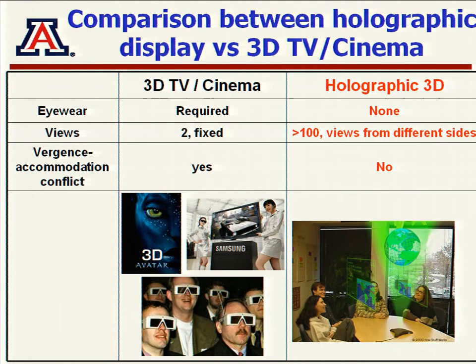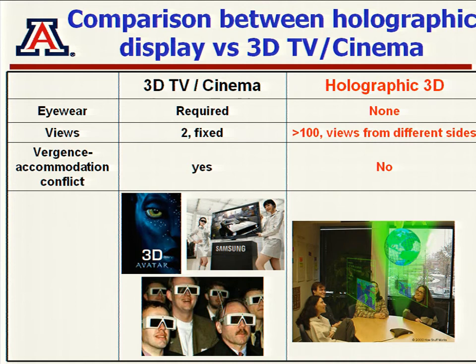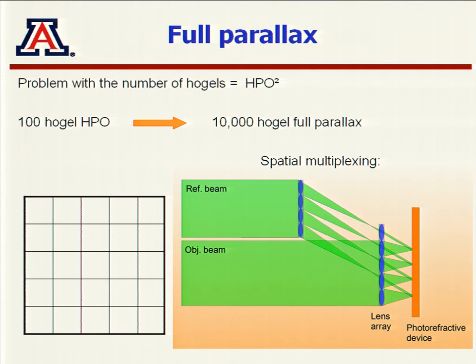Ultimately, you can imagine a system where people sitting around a table interact through this display: the person on the right side sees a different view of the object than the person on the left. You can have these 3D systems either in portrait mode like a movie, or as something you go around and see different perspectives. In a 3D movie right now, the person sitting on the left of the theater and the person on the right see the same image — with our system they would see different views.